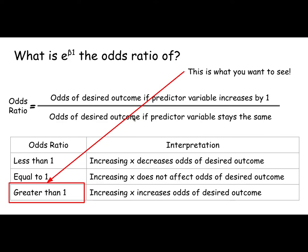And if the odds ratio is greater than one, that means that increasing your predictor variable increases the odds of this desired outcome. And most of the time in the OT literature, that's what you want to see: that increasing my predictor increases my odds of success.